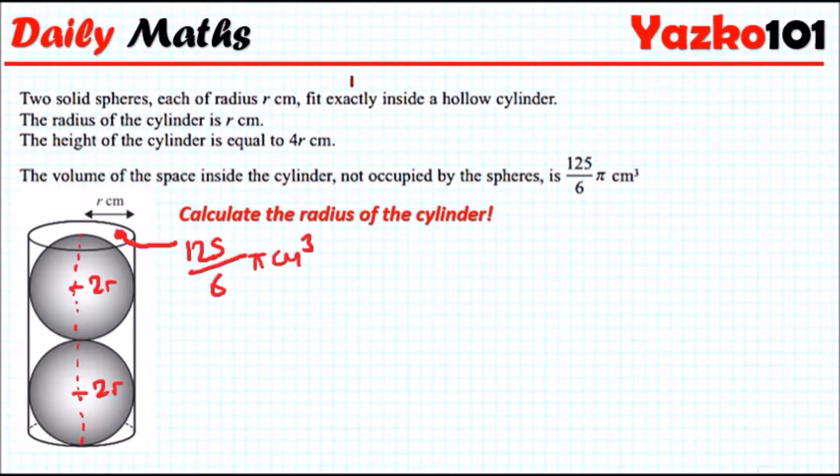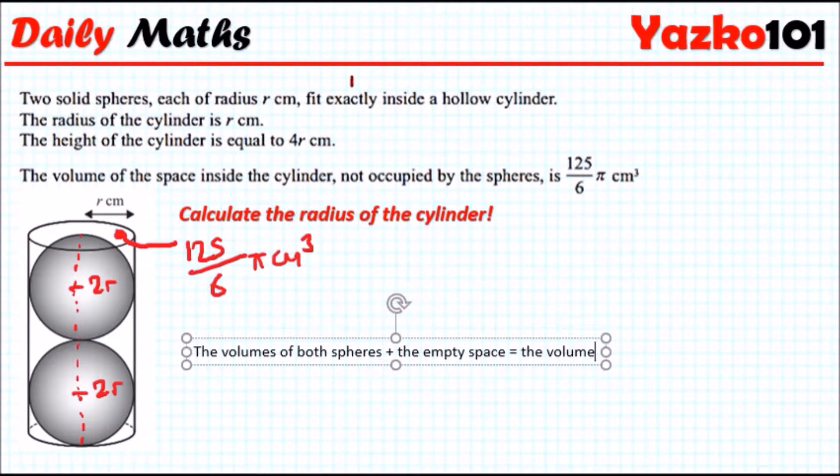So if we're writing words, I'm going to put a text here. The volumes of both spheres plus the empty space will equal the volume of the cylinder, which is true. That would make the total volume.